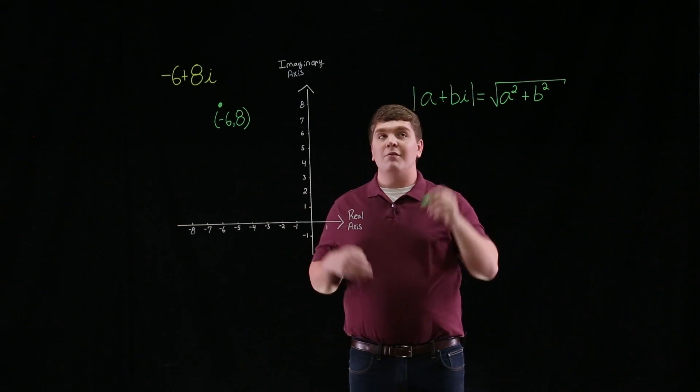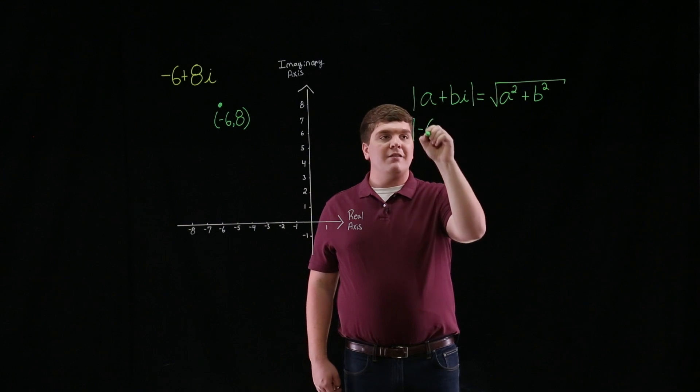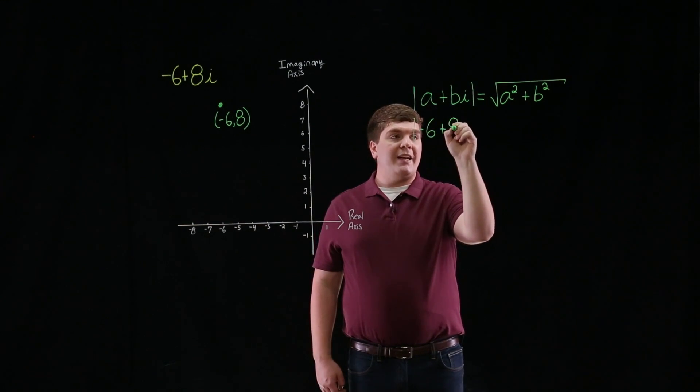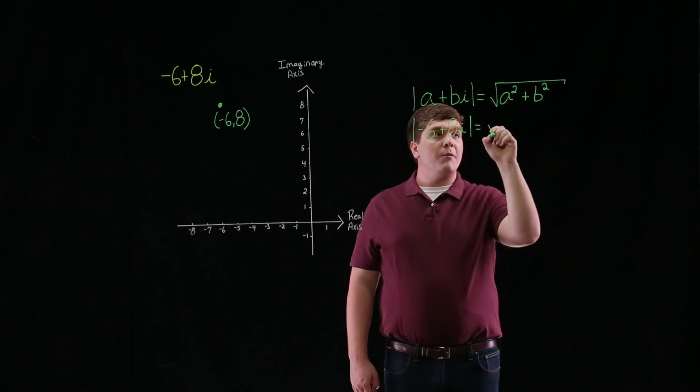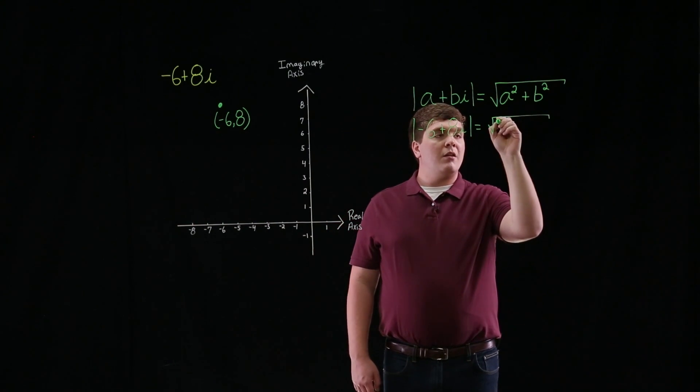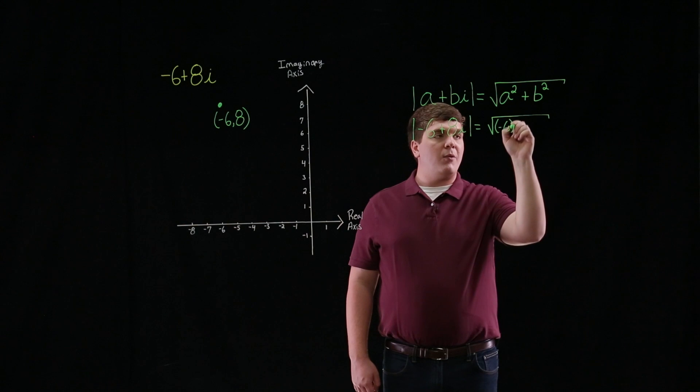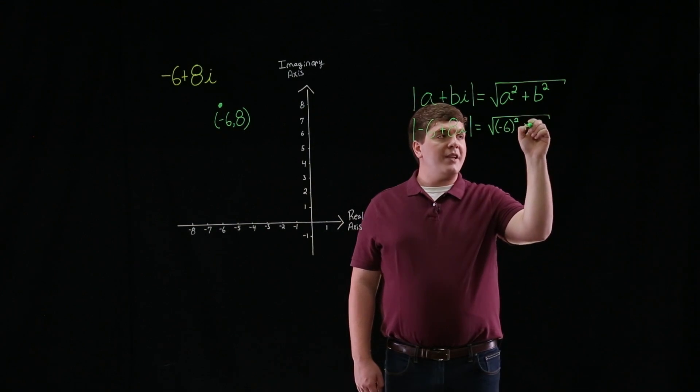So, if we're looking for the absolute value of negative 6 plus 8i, it will be equal to the square root of negative 6 quantity squared plus 8 squared.